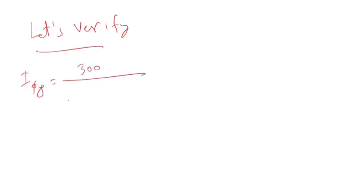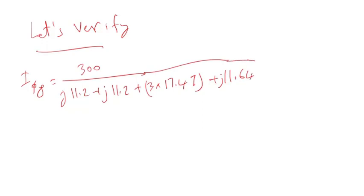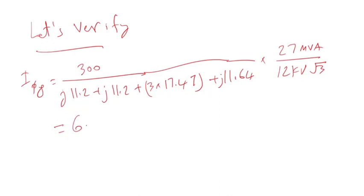To verify: the line-to-ground fault equals 300 divided by (j11.2 + j11.2 + 3×17.47 + j11.64%) times the base current of 27 MVA divided by (12 kV × √3). Calculating this gives approximately 6,001 amps, which is acceptable.